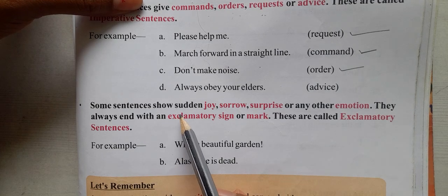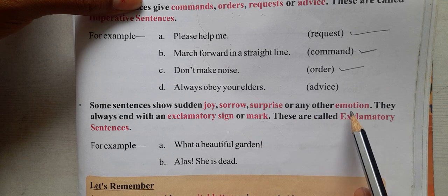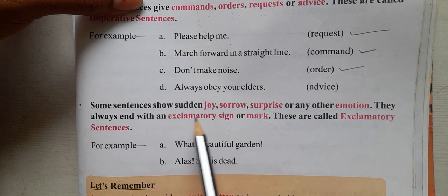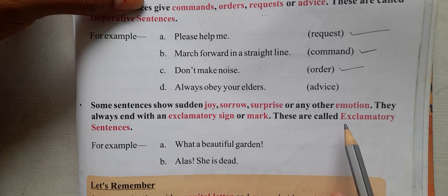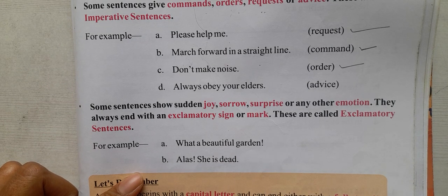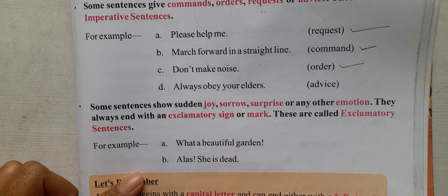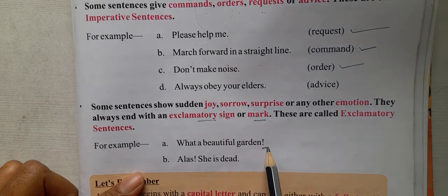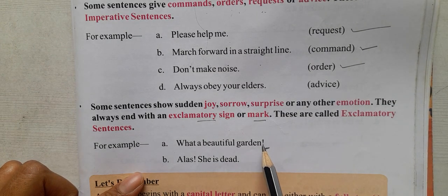Some sentences show sudden joy, sorrow, surprise, or any other emotion. They always end with an exclamatory mark. These are called exclamatory sentences. For example: 'What a beautiful garden!' and 'Alas, she is dead!' These sentences express joy, sorrow, or surprise and end with an exclamatory sign.